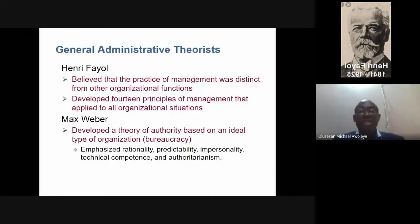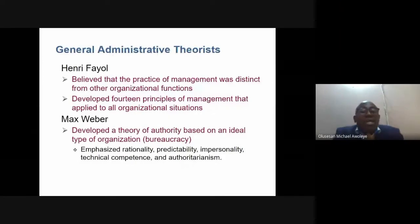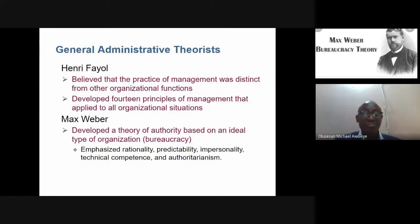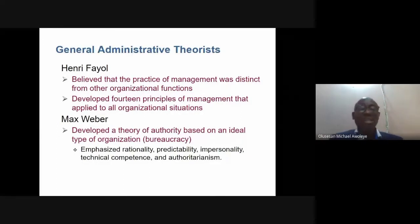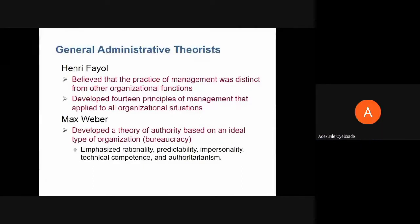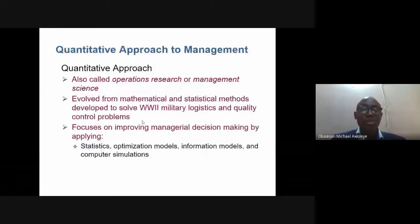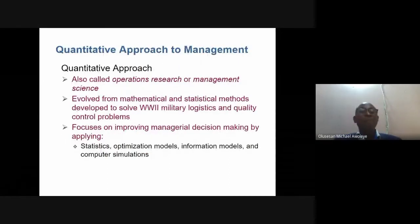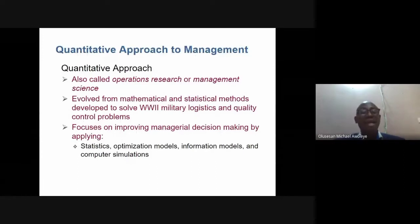On general administrative theory: Fayol believed that the practice of management was distinct from other organizational functions. Max Weber developed a theory of authority based on an ideal type of organization — he believed strongly in bureaucracy. In bureaucracy, you cannot just walk straight into a manager's office without knocking, filling a memo, or being authorized to gain entrance.